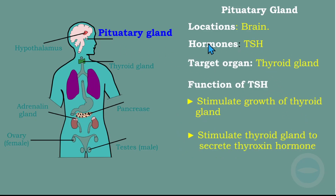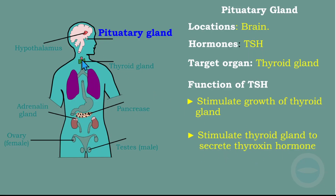TSH, the thyroid stimulating hormone, targets the thyroid gland. Its functions are to stimulate the growth of the thyroid gland and to stimulate the thyroid gland to secrete thyroxine hormone. So for the thyroid gland to secrete thyroxine, the pituitary gland first secretes TSH. The functions of thyroxine will be explained when we come to the thyroid gland.